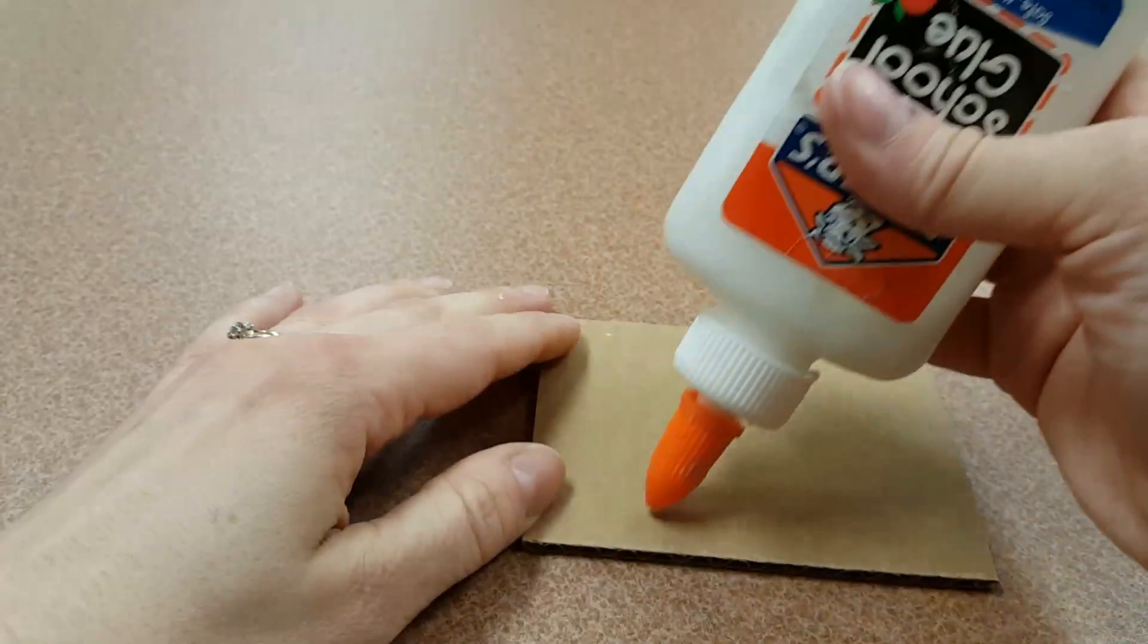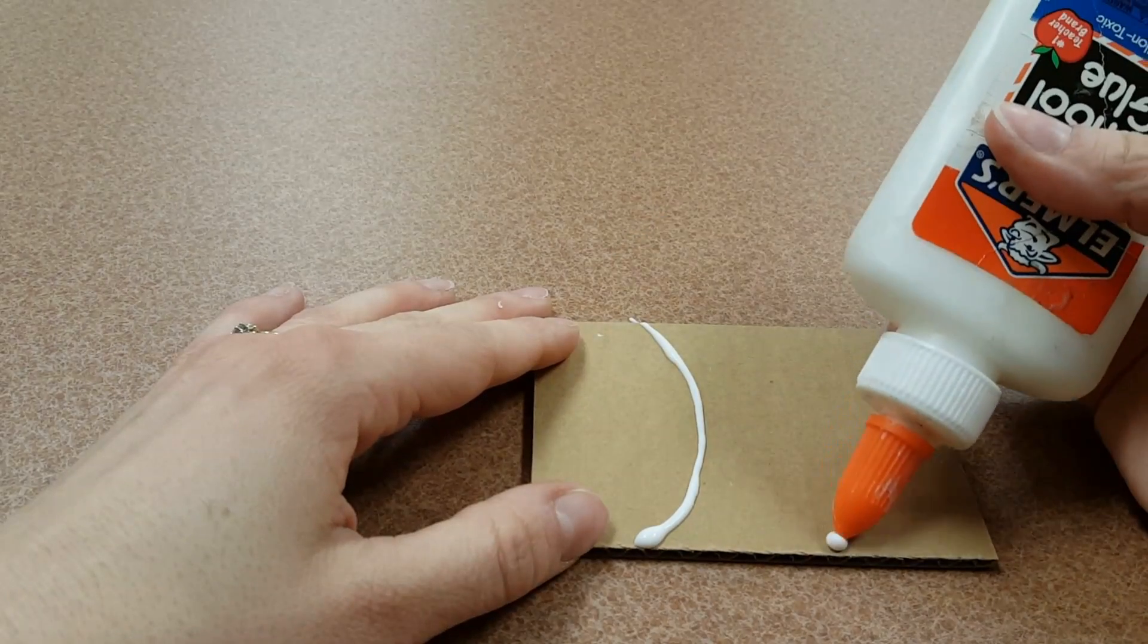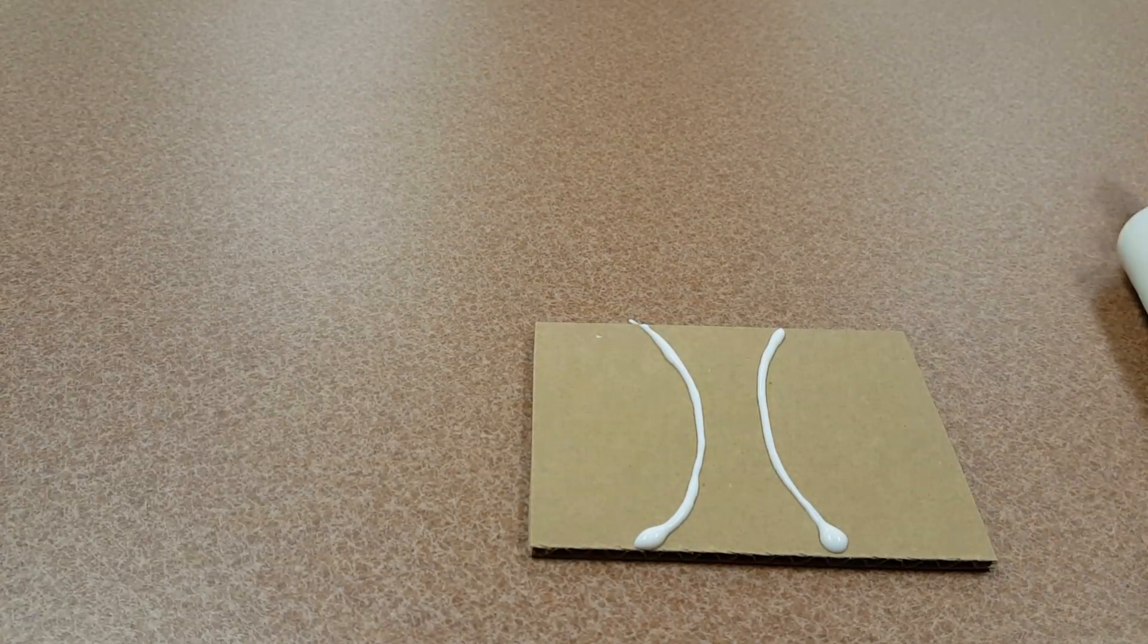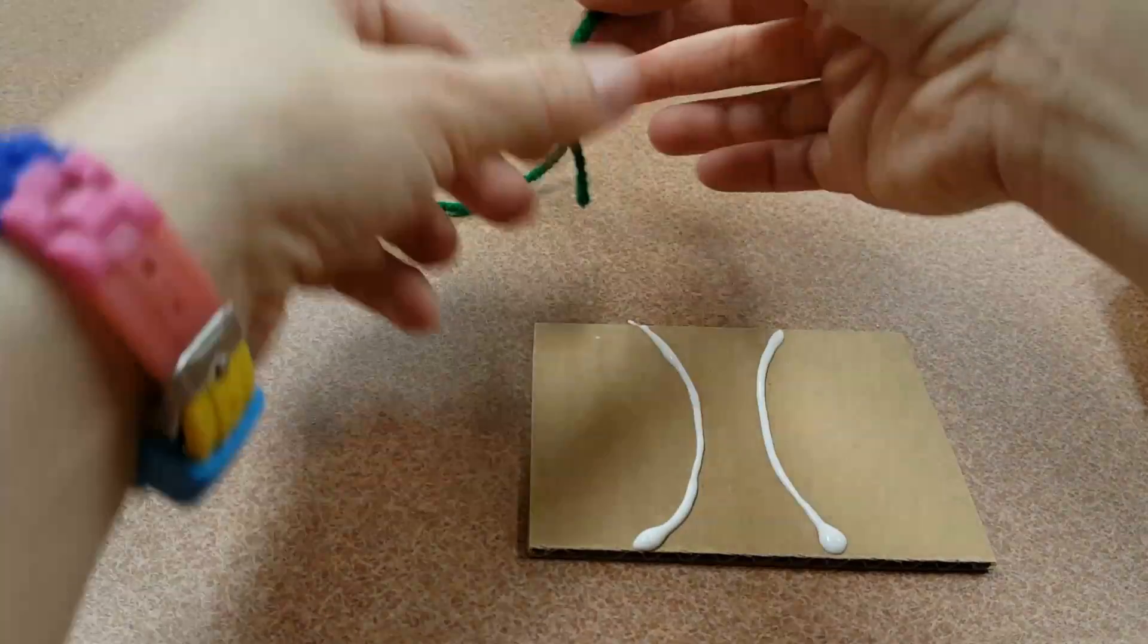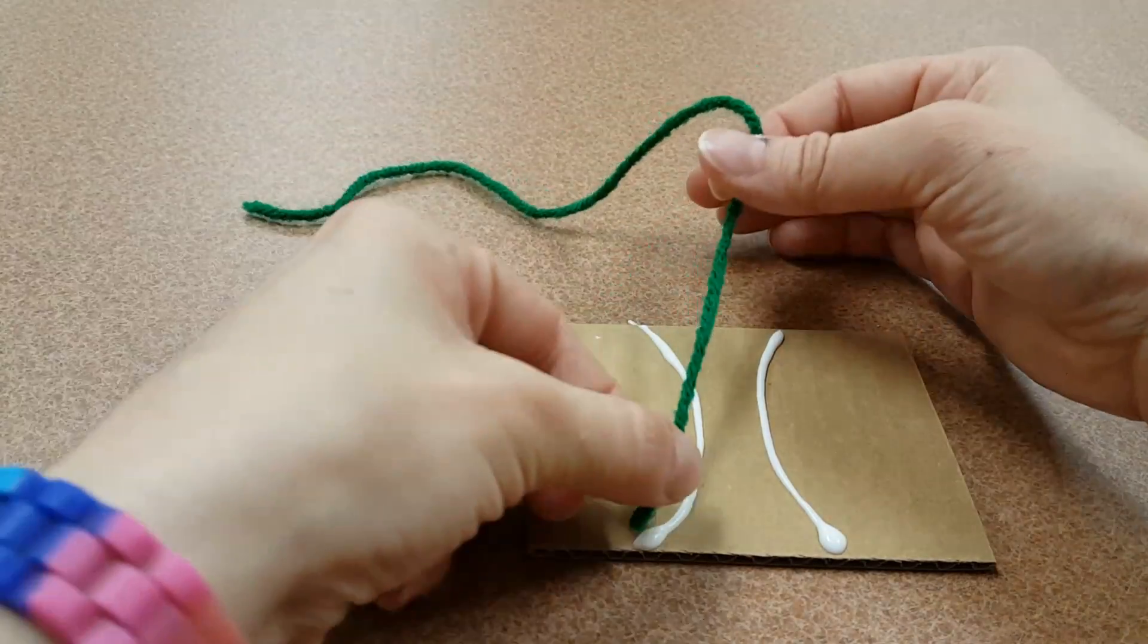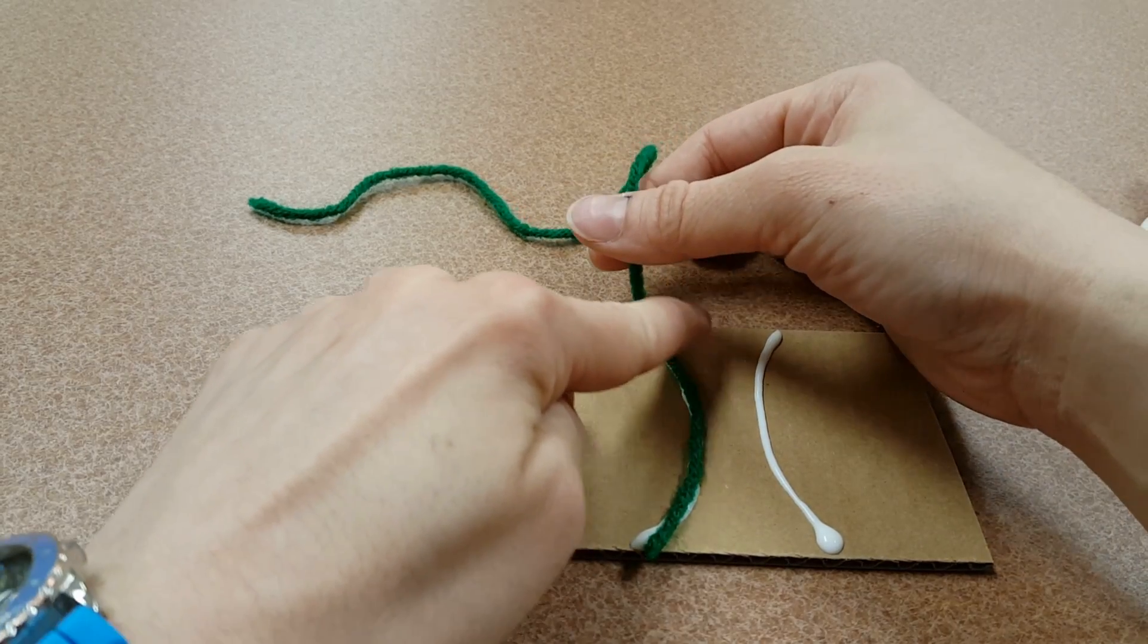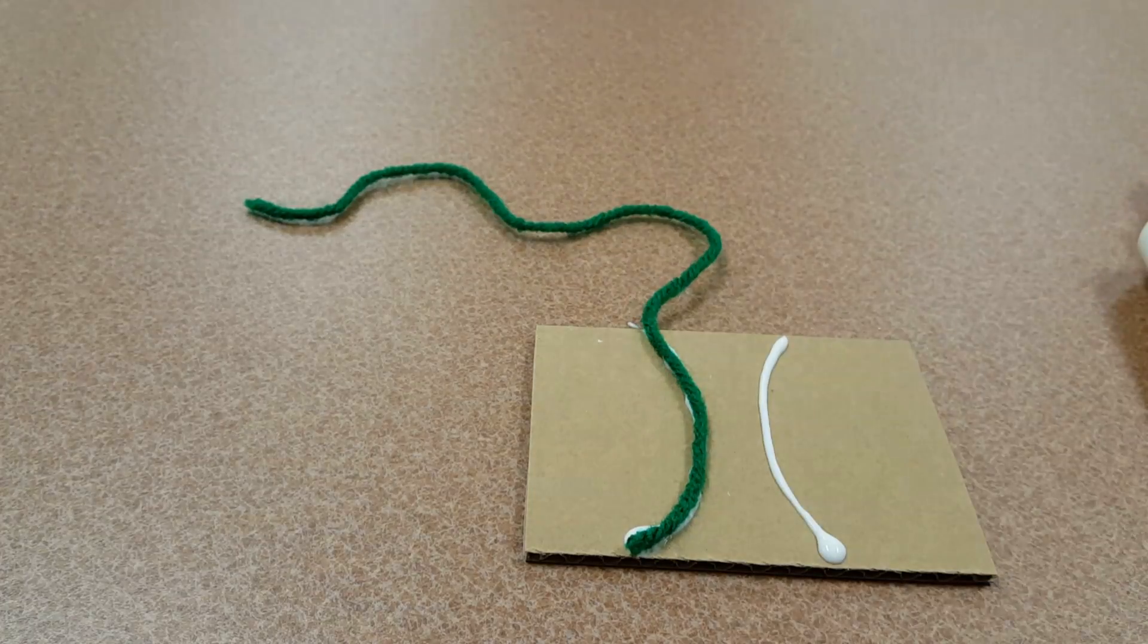I'm going to draw a design with glue, doing a little bit at a time. Then we take some yarn and follow the line with the yarn, gently tapping. I'm not pushing super hard, because if I push super hard then my finger will get covered in glue.